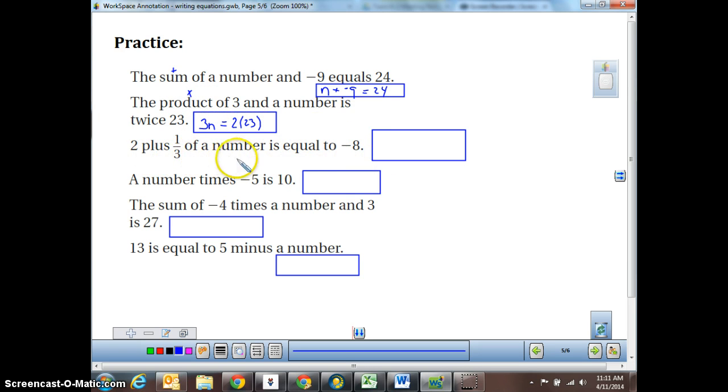2 plus 1 third of a number is equal to a negative 8. Again, equal to a negative 8. I know that's my end result. 2 plus 1 third of a number.